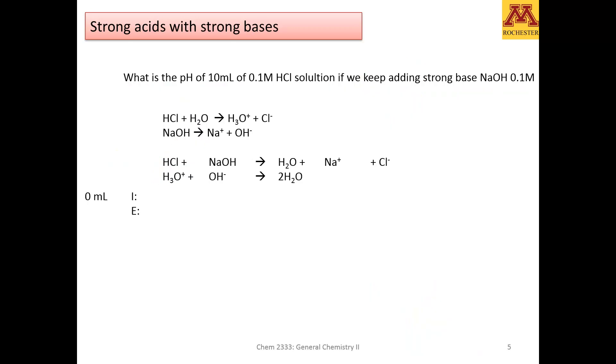So let's do that. Let's calculate the pH at different stages. For example, if initially we have added no sodium hydroxide in the Erlenmeyer, that means that we only have the hydrochloric acid. What is the concentration of hydrochloric acid? The concentration of hydrochloric acid is 0.1. Therefore, initially, the pH is 1. So in this case, the pH is 1. We don't even need to build any ice table because we have not added any OH negative. So the pH is 1 before we have added any hydroxide.